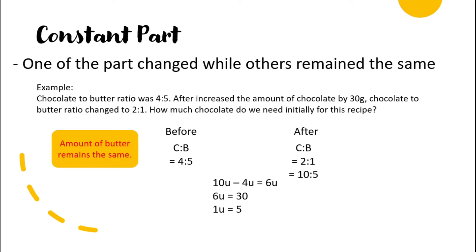First is constant part, which means one of the parts changes while others remain the same. For example, the chocolate to butter ratio was four to five. After increasing the amount of chocolate by 30 grams, the chocolate to butter ratio changed to two to one. From this question, you will realize that the amount of chocolate changed but the amount of butter remained the same, so we can use constant part.